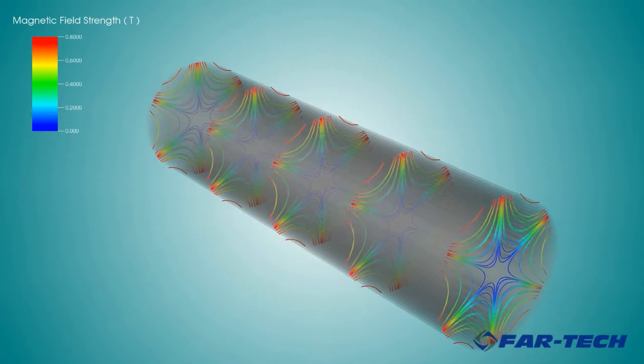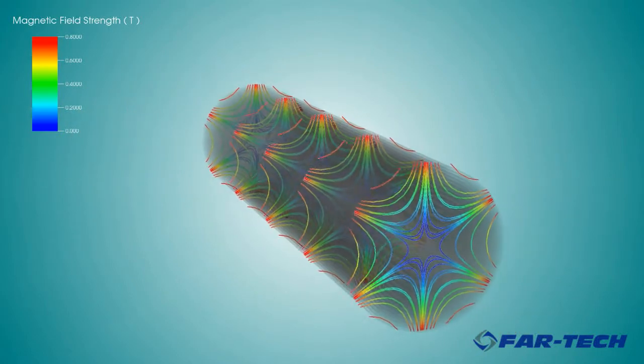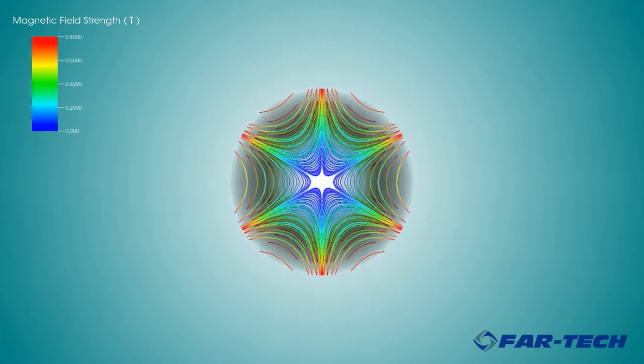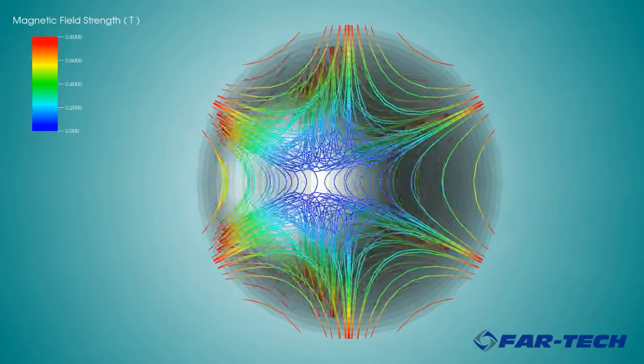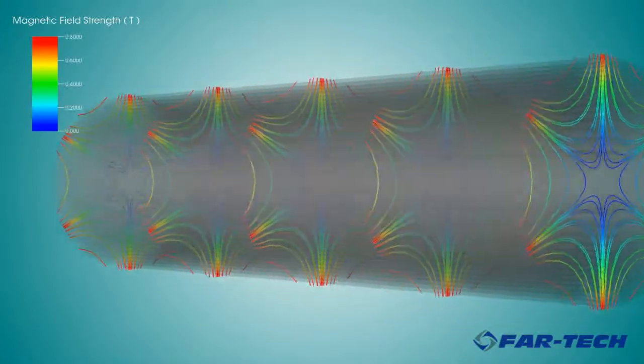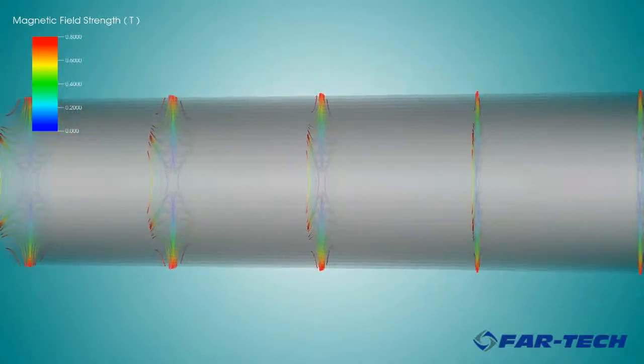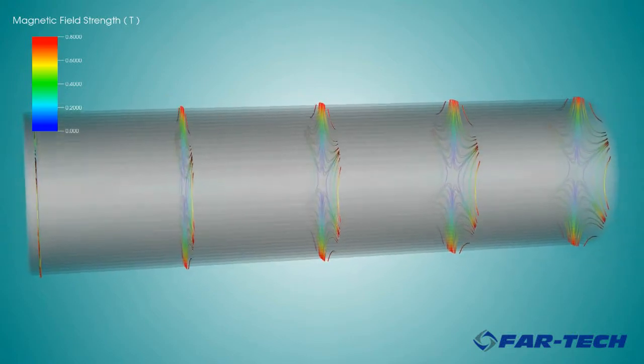The field is often generated using six bar magnets producing a hexapole field. The field lines lie in planes perpendicular to the axis of the cylinder. Adding this field to the mirror field causes the field lines to bend outward toward the chamber wall.